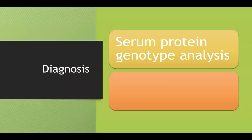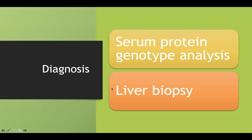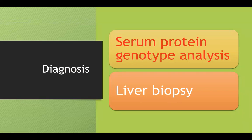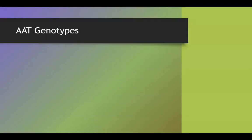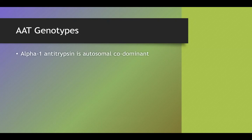To diagnose alpha-1 antitrypsin deficiency, you can do a serum protein genotype analysis or a liver biopsy — as with most conditions we've discussed, the gold standard is the liver biopsy. I want to spend some time on the genotype analysis because the inheritance mechanism is tested: alpha-1 antitrypsin is a codominant disorder, and they'll use this disease to test your understanding of basic genetics for Step 1.